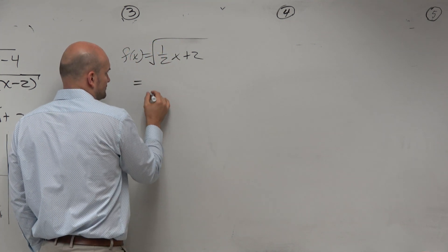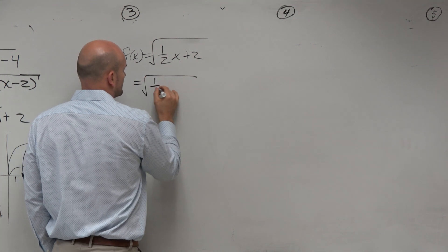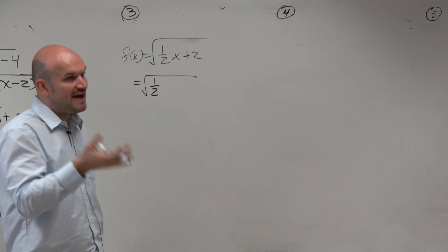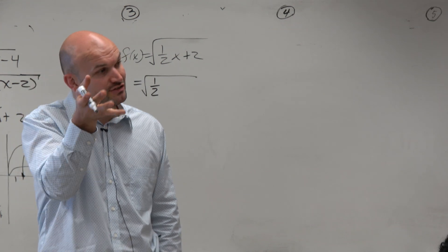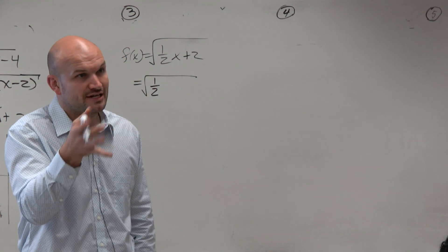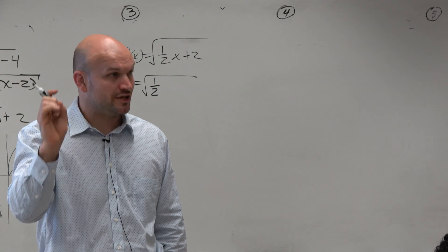So what we need to do is factoring out is kind of the same thing as dividing out, right? When you're factoring out a number, like when you're factoring out a 2, you're basically dividing each value by 2.